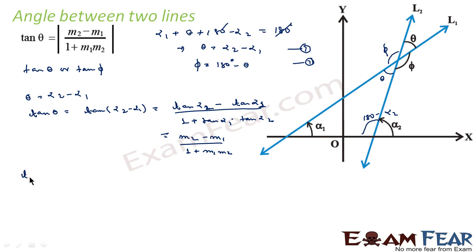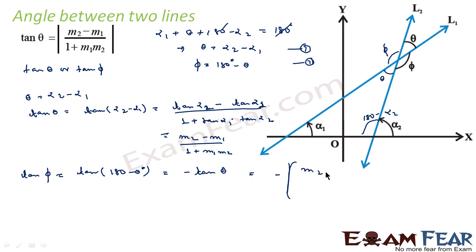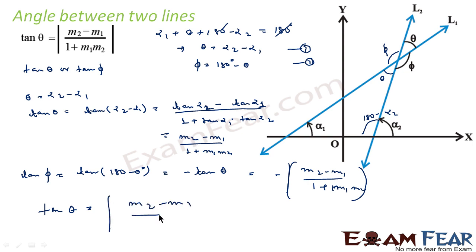Similarly, tan of phi equals tan(180 minus theta), which is minus tan theta. So tan phi equals minus of (m2 minus m1) by (1 plus m1 m2). Therefore the angle between the two lines is either (m2 minus m1)/(1 plus m1 m2) or minus that value. We write the general equation: tan theta equals mod of (m2 minus m1) by (1 plus m1 m2). Please note the mod is very important here.